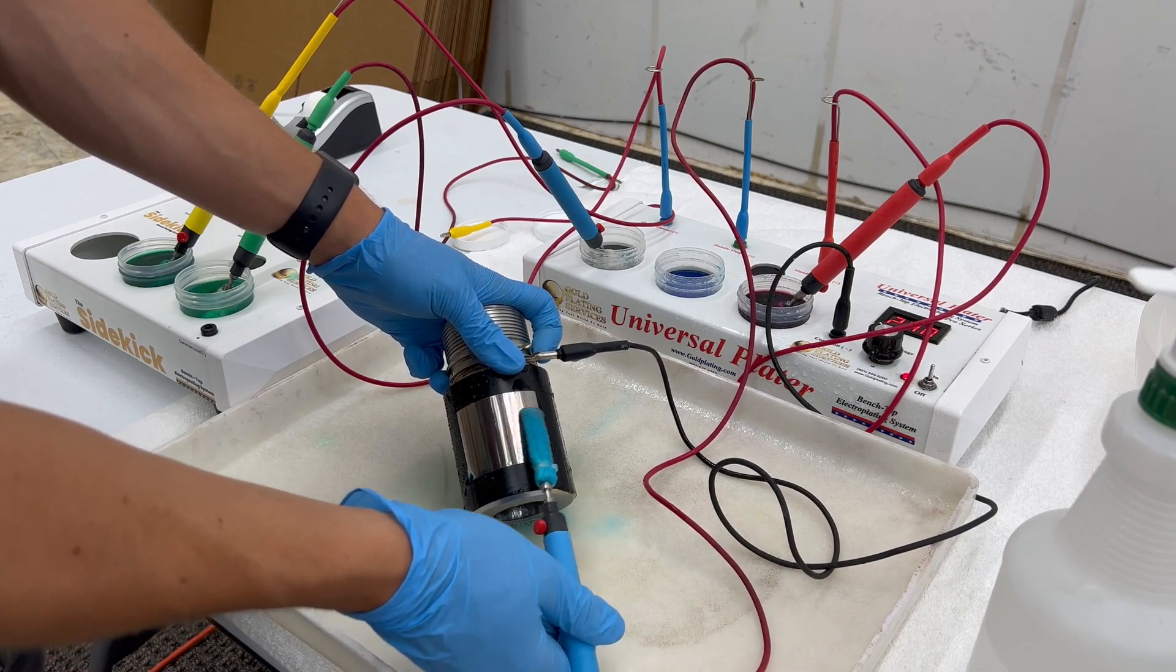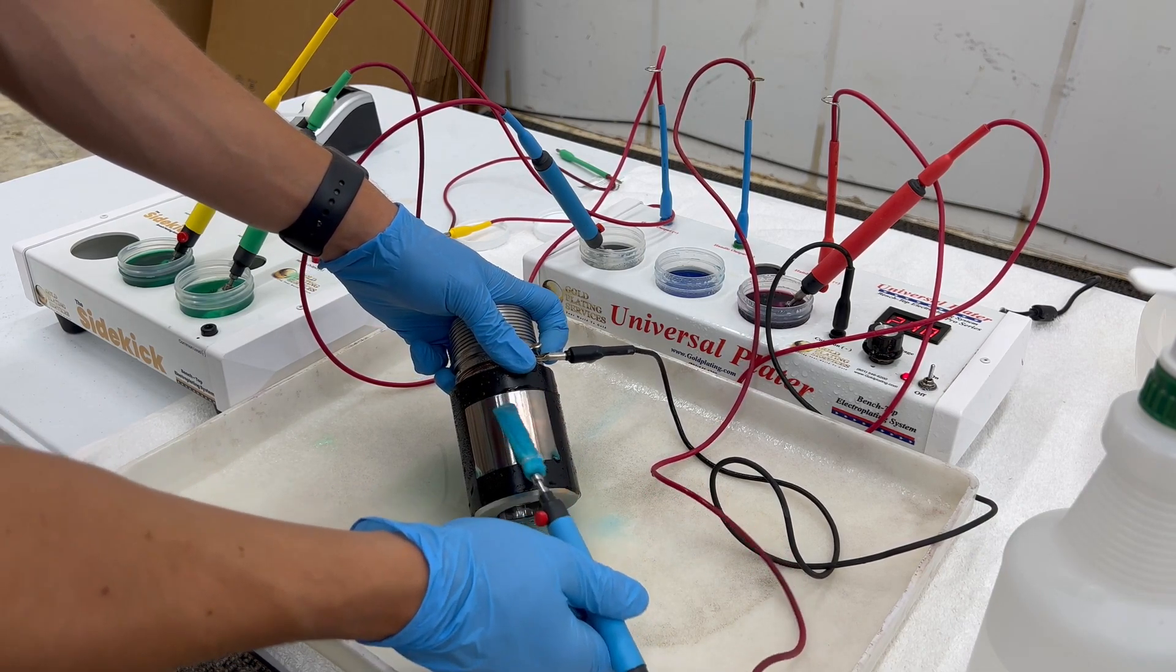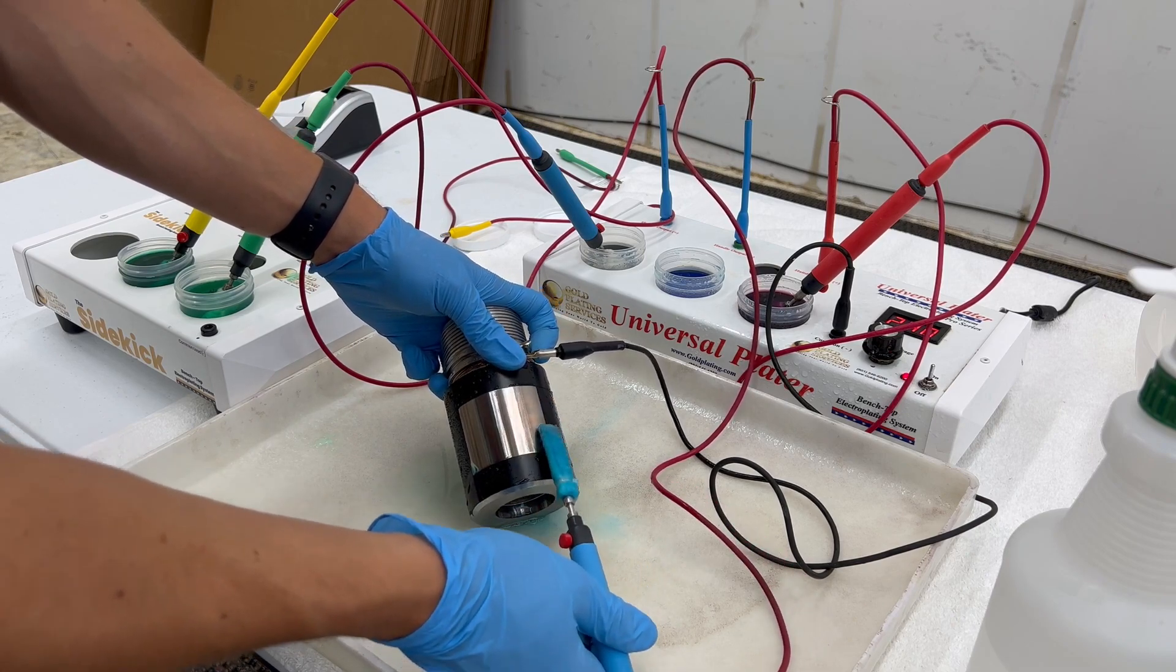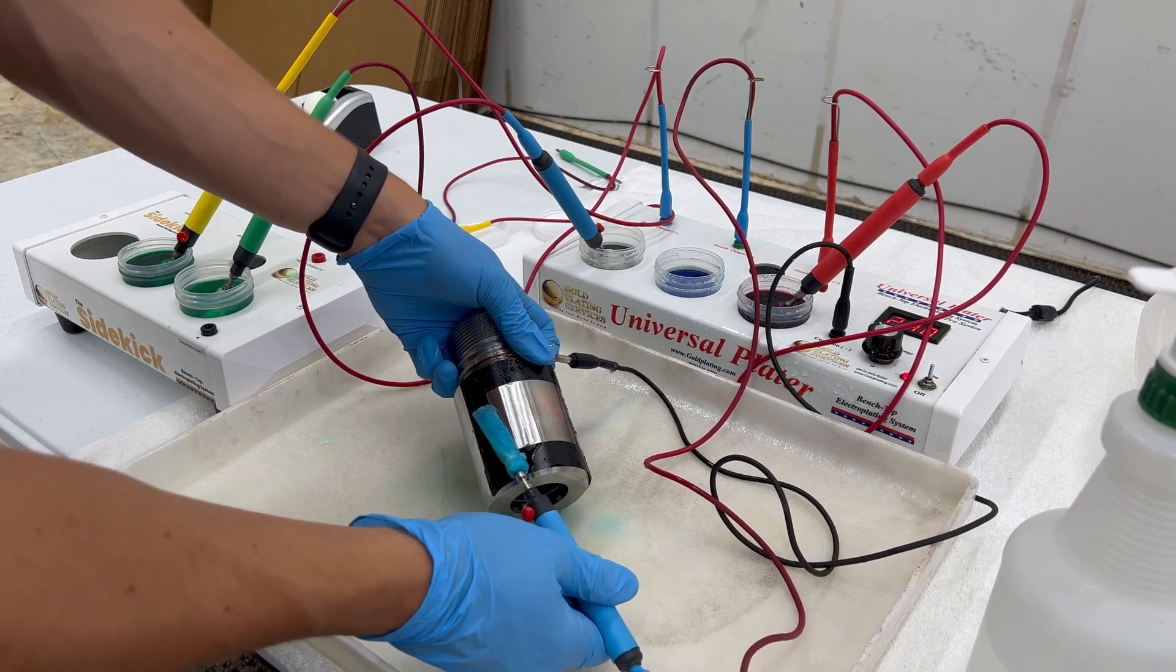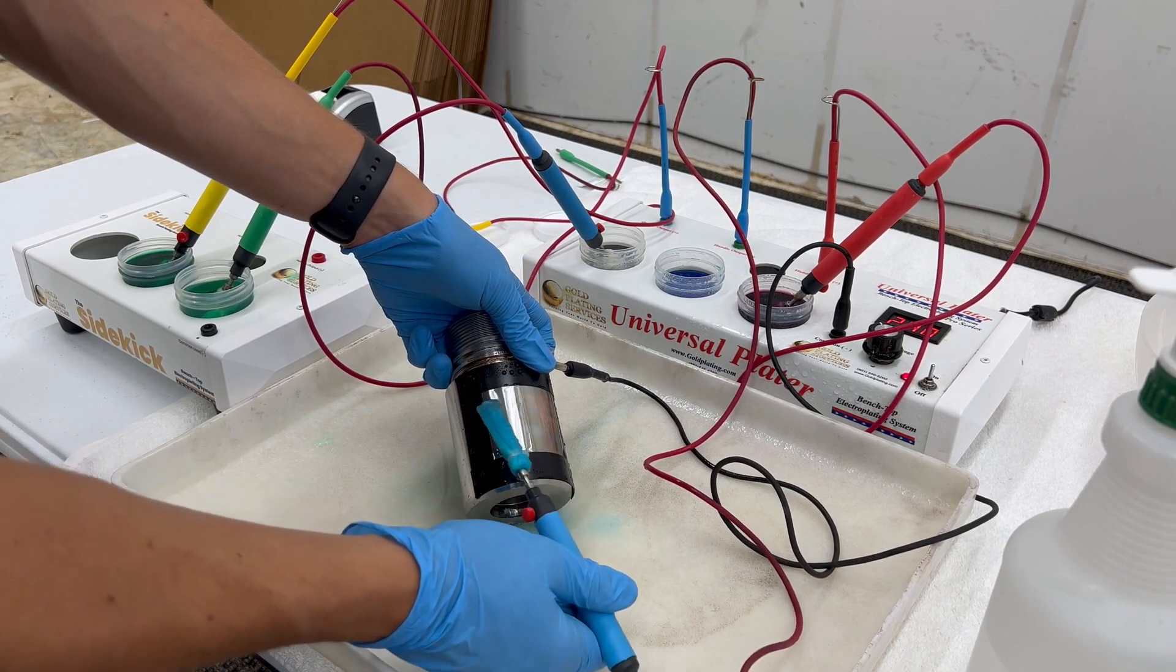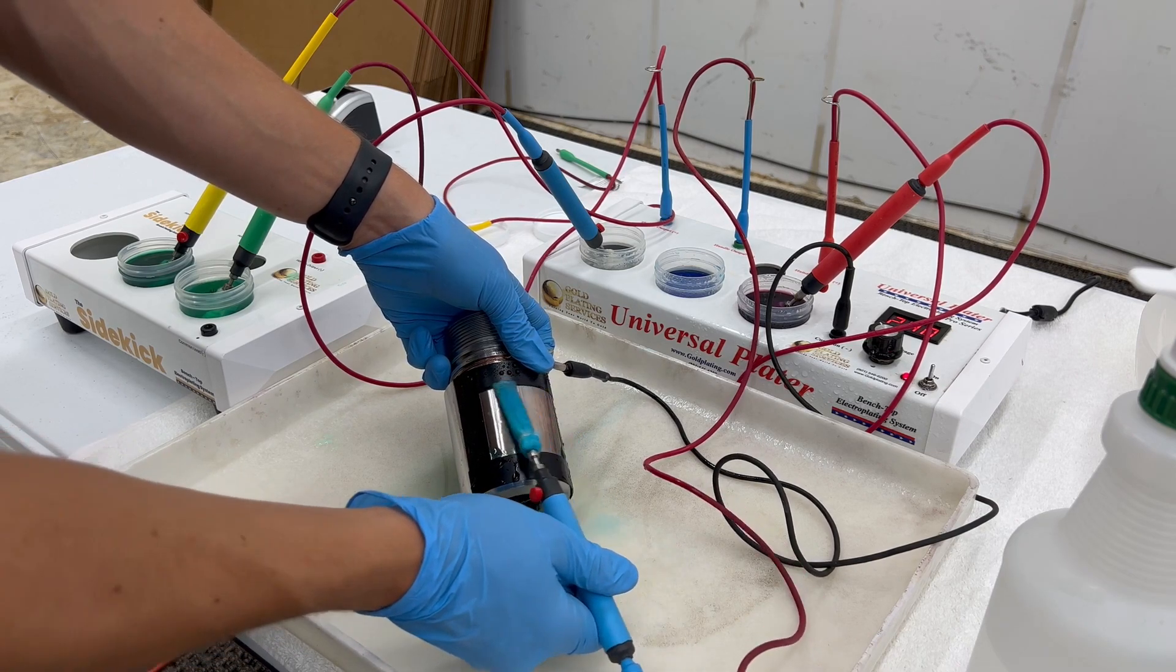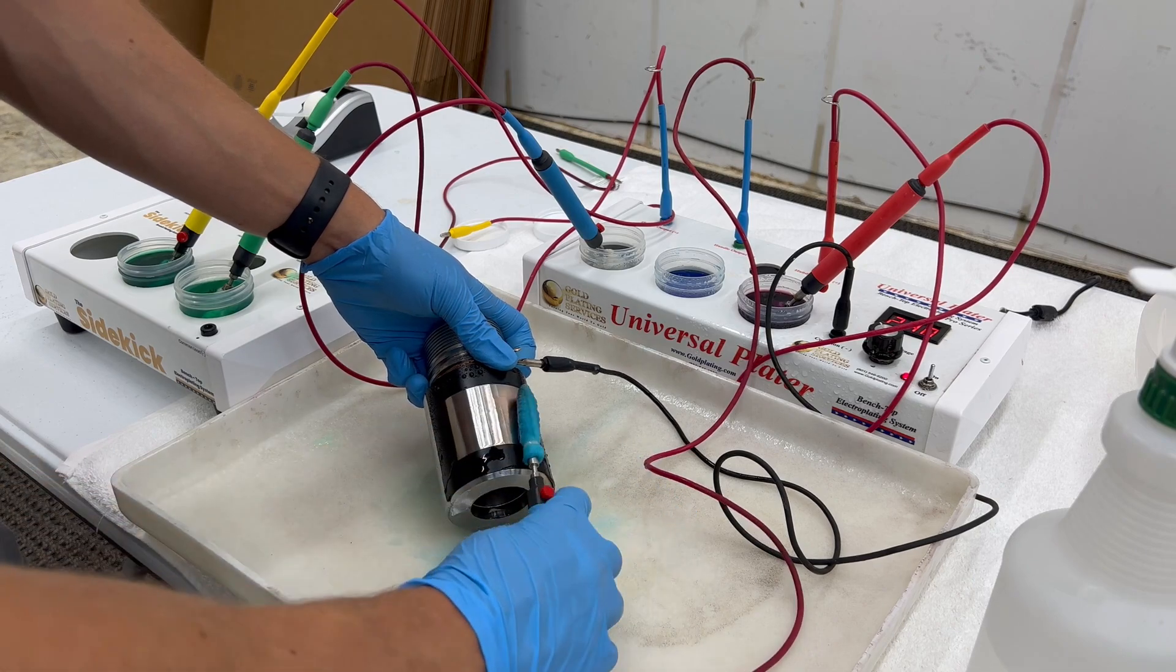The reason to use copper strike is because it's a visual aid to see your part is activated properly before you plate it with the nickel. The copper strike is soft enough so it is easy to remove if there's an issue, unlike the nickel that is harder to remove when you do have an issue.